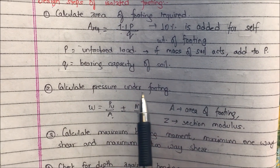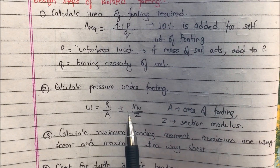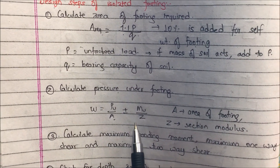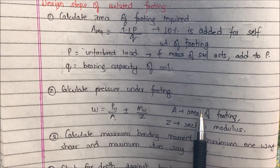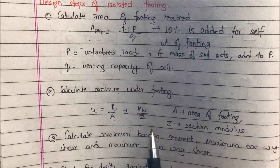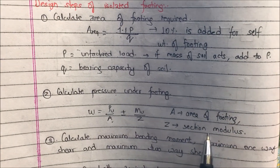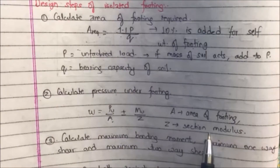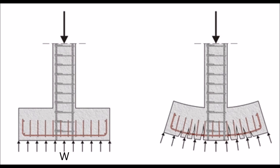Calculate pressure under the footing. W is equal to PU divided by A, plus or minus MU divided by Z. A is the area of footing calculated from the above step. Z is the section modulus, and for a rectangular footing Z is equal to BD squared divided by 6, where B and D are the width and depth of the footing. W is the pressure acting on the footing from the soil, as shown in the figure.